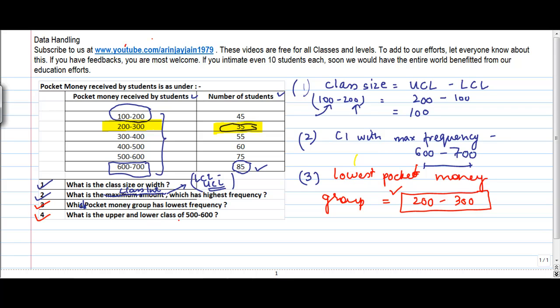What is the upper class and the lower class of 500 to 600? Now we know that the upper class limit of any class interval is the point where it ends, so the upper class limit is 600. And the lower class limit is the point from where it starts, which is 500 in this case. So the upper class limit is 600 and the lower class limit is 500. So this is how basically you solve these different questions and interpret it.